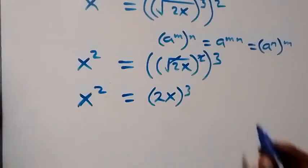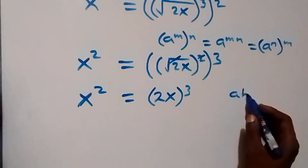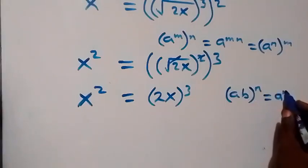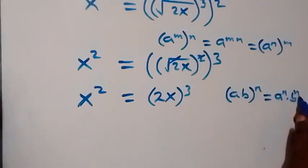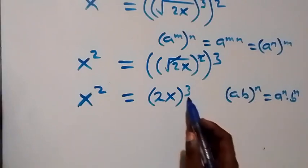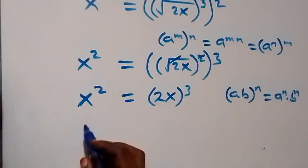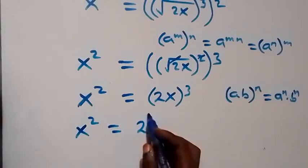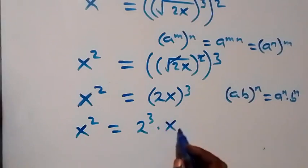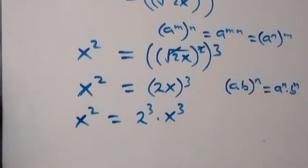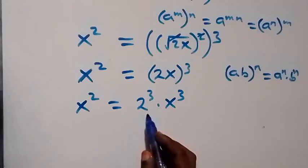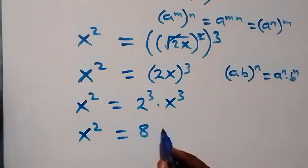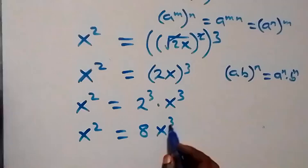From the law of indices, (ab)^n equals a^n times b^n. So this power of 3 affects both 2 and x. We have x squared equals 2 cubed times x cubed. Now 2 cubed is 2 times 2 times 2, which is 8, so we have x squared equals 8x cubed.